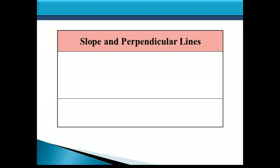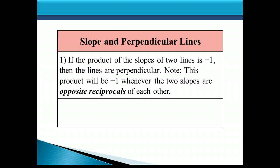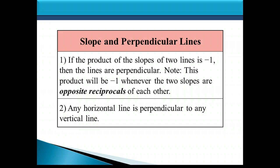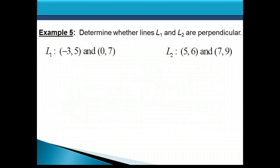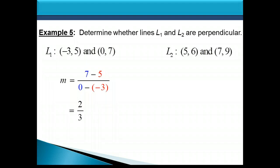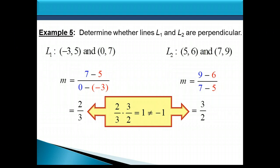Now let's talk about slope and perpendicular lines. Perpendicular lines intersect each other at a 90-degree angle, forming a perfect L-shape or T-shape. If the product of the slopes of two lines is negative 1, then the lines are perpendicular. This happens when the two slopes are opposite reciprocals — opposite in sign and reciprocals of each other. It's also true that any horizontal line is perpendicular to any vertical line. For example, if L1 has slope 2 thirds and L2 has slope 3 halves, then 2 thirds times 3 halves equals 1, not negative 1, so these two lines are not perpendicular.